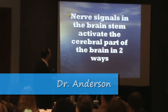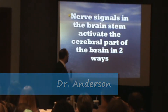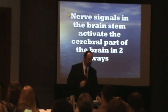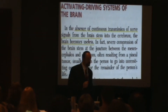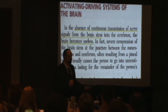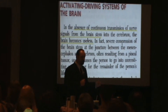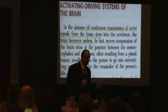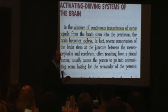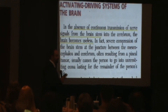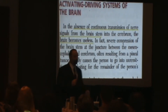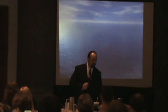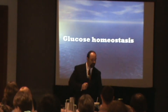The nerve signals in the brainstem activate the cerebral part of the brain in two ways. In the absence of continuous transmission of nerve signals to the brainstem, from the brainstem, the brain becomes useless. So we're talking about the activating driving systems.